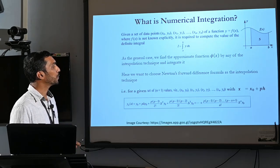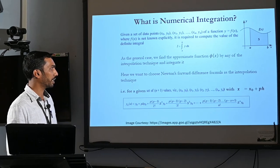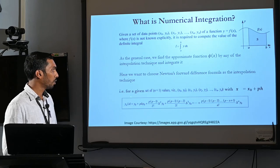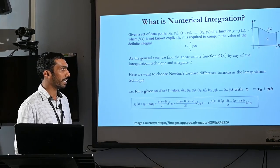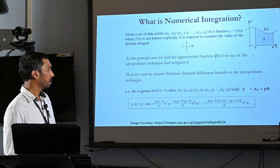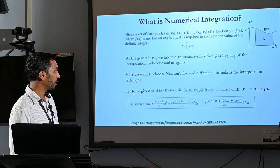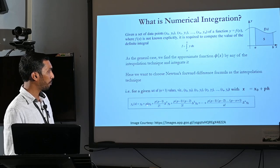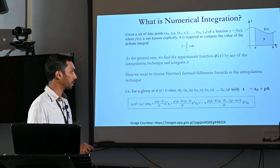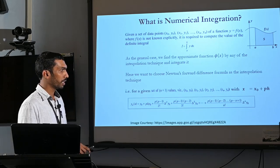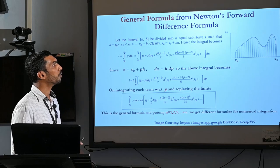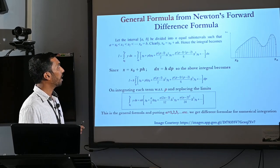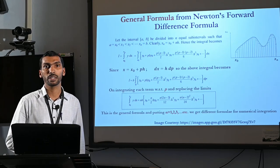Here we want to choose Newton's forward difference formula as the interpolation technique. That is, for a given set of n plus 1 values from x0, y0 to xn, yn, with x equal to x0 plus p*h, the Newton's forward difference formula gives the interpolating polynomial as y_n(x) equal to y0 plus p*delta(y0) plus p(p-1)/2! * delta²(y0). Using this Newton's forward difference formula, we are obtaining a general formula for numerical integration.